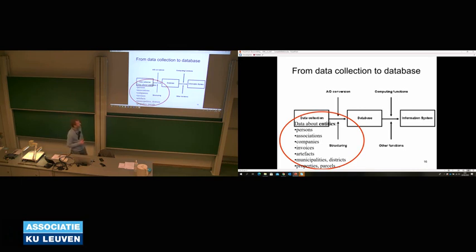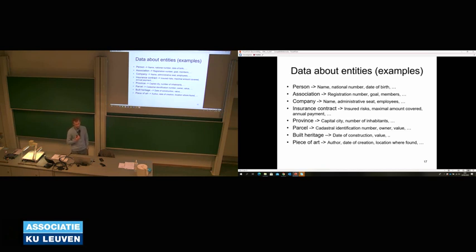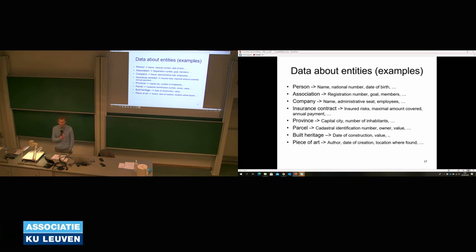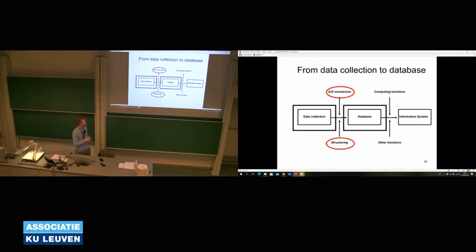You will collect data about entities — remember the definition: a crisp object with clear boundaries. Examples of entities are persons, associations, companies, invoices, municipalities, agricultural parcels, and forest patches — they all have a clear boundary. What kind of data can you collect? If it's a person: name, national number, age, date of birth. If it's a parcel: the cadastral identification number, who is the owner, the value, when it was sold previously, what crops are grown. This can also be very important data about the entity.